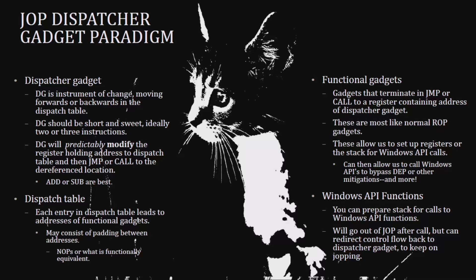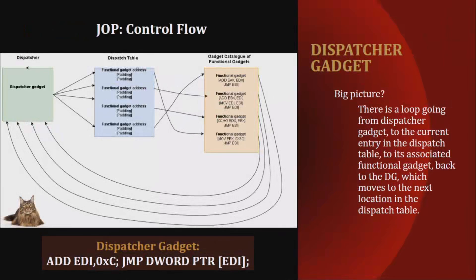The two key JOP paradigms are the dispatcher gadget and the dispatch table. The dispatcher gadget is the instrument of change — it moves things forward and backward in the dispatch table, should be short and predictable, and modifies the register holding the address to the dispatch table. The dispatch table has entries leading to functional gadget addresses. The functional gadgets modify registers and set up the stack for Windows API calls, cycling back through the dispatcher until the goal is accomplished.